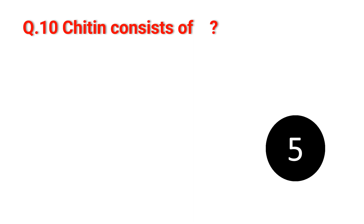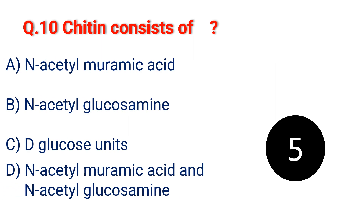Question 10. Chitin consists of: A. N-acetyl muramic acid. B. N-acetyl glucosamine. C. Glucose unit. D. N-acetyl muramic acid and N-acetyl glucosamine.